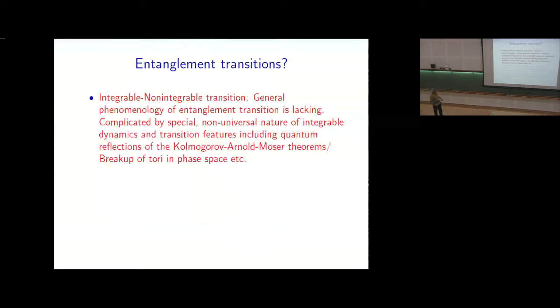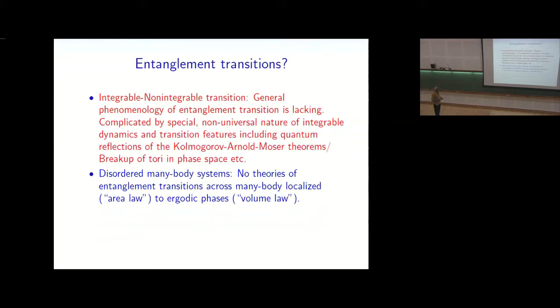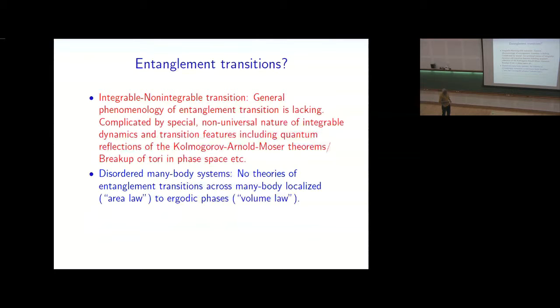So can we characterize entanglement transitions? So integrable to non-integrable transitions. Like in the first graph of the pendulum I gave, I would characterize it as mere integrable to non-integrable transition. General phenomenology of entanglement is lacking. It's complicated by special non-universal features, such as the classical Kolmogorov-Arnold-Moser theorem. The phase space is messy. It's got tori and so on. It's a hard problem. Disordered many-body systems are currently of large interest, but as far as I know, there is no general theory of these entanglement transitions across, for example, a many-body localized to ergodic phases.